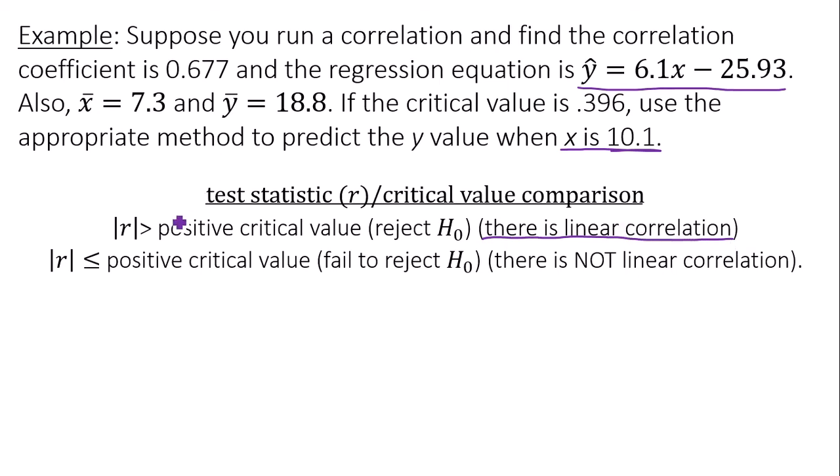So to show there is linear correlation, we need to compare the correlation coefficient with the positive critical value. In this example, the correlation coefficient is 0.677 and the critical value is 0.396. So let's compare 0.677 to 0.396. The correlation coefficient is greater than the critical value, which puts us in this top portion here.